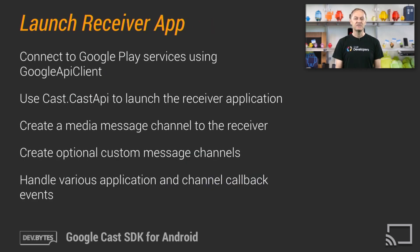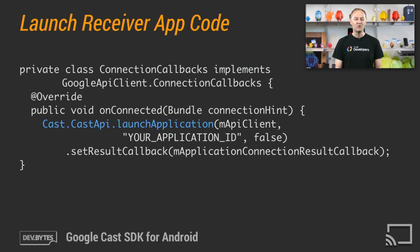Now that the sender app knows which Cast device the user has selected, launching the Receiver app involves a few steps. The sender app needs to connect to Google Play services using the Google API client class. Then the app uses the Cast.CastApi class to launch the Receiver app using the app ID obtained from the developer console. Once the Receiver app has launched, the sender can create a media message channel or a custom message channel to the Receiver. The app has to handle various callbacks about the application and the channel status. Here's an example of how to launch the Receiver app once the sender app has connected to Google Play services. The result callback is invoked with the launch status and the application metadata. Note the same asynchronous callback model is used throughout the lifecycle of a Cast app.